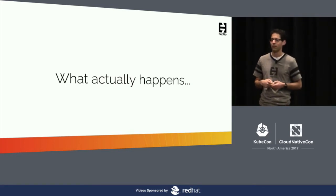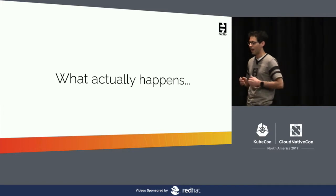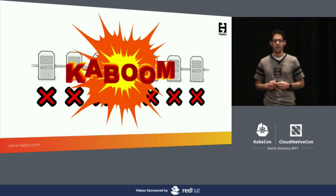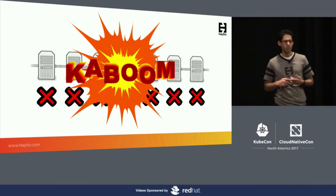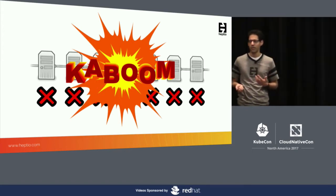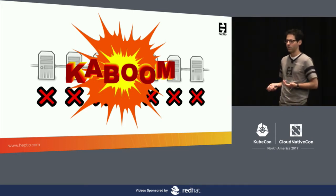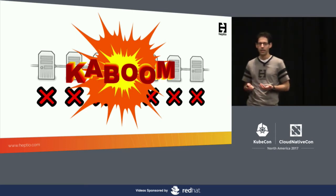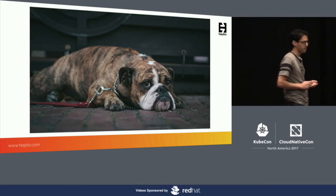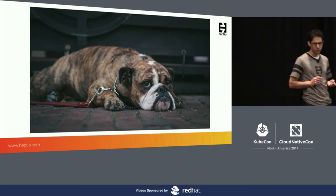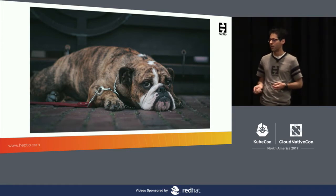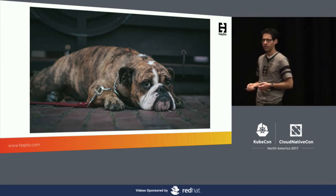But no matter how good your infrastructure is, no matter how excellent your network is, something is going to go wrong. You'll probably get a page or a phone call or a Slack notification, and you're going to have to deal with it. In the short term, you're probably not going to be very happy, but we're going to give you some ideas around how you can do disaster recovery for your Kubernetes clusters.